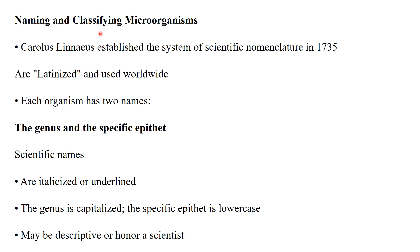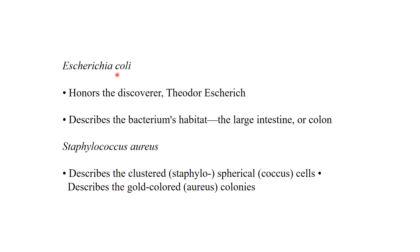Naming and classification of microorganisms: scientific names were established by Carolus Linnaeus in 1735. This system of scientific nomenclature is also used for the naming and classification of microorganisms. Microbial names are always latinized and used worldwide. Each organism has two names — the genus and the specific epithet. Scientific names are italicized or underlined; the genus is capitalized and the specific epithet is lowercase. For example, Escherichia coli is named to honor its discoverer Theodor Escherich, and describes the bacterium's habitat — the large intestine (colon).